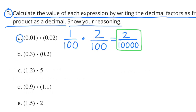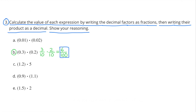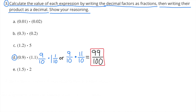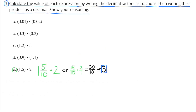Number three: Calculate the value of each expression by writing the decimal factors as fractions, then writing their product as a decimal. A: One-hundredth times two-hundredths equals two ten-thousandths. B: Three-tenths times two-tenths equals six-hundredths. C: One and two-tenths times five, or twelve-tenths times five over one, equals sixty-tenths, or six. D: Nine-tenths times one and one-tenth, or nine-tenths times eleven-tenths, equals ninety-nine-hundredths. E: One and five-tenths times two, or fifteen-tenths times two over one, equals thirty-tenths, or three.